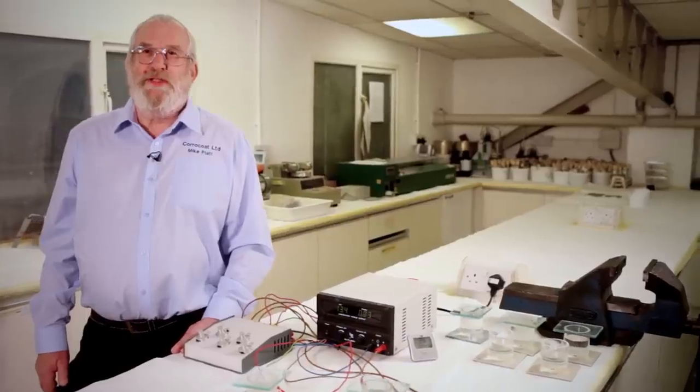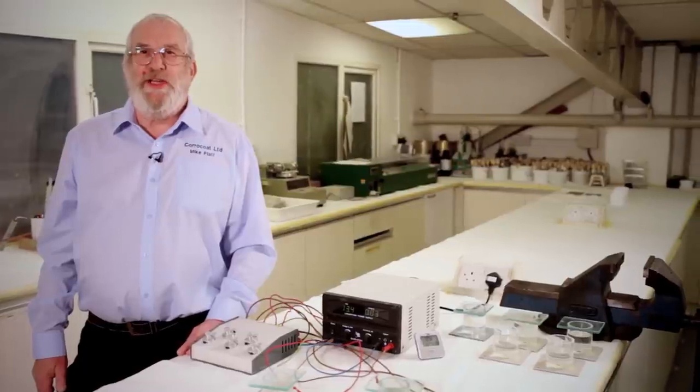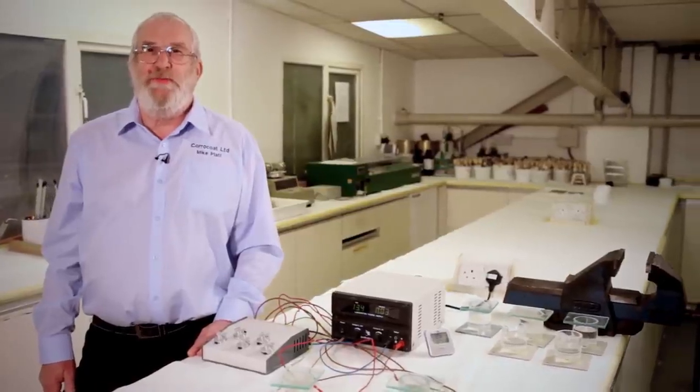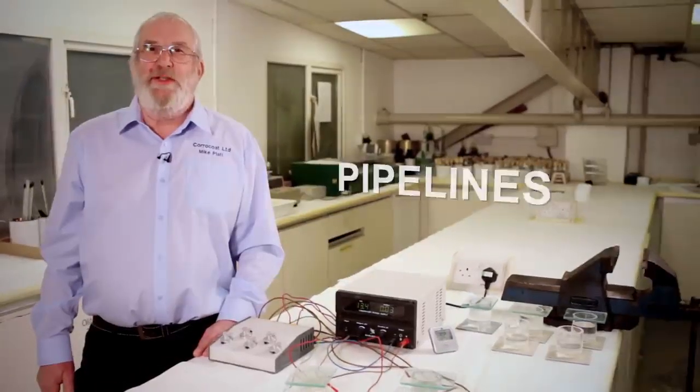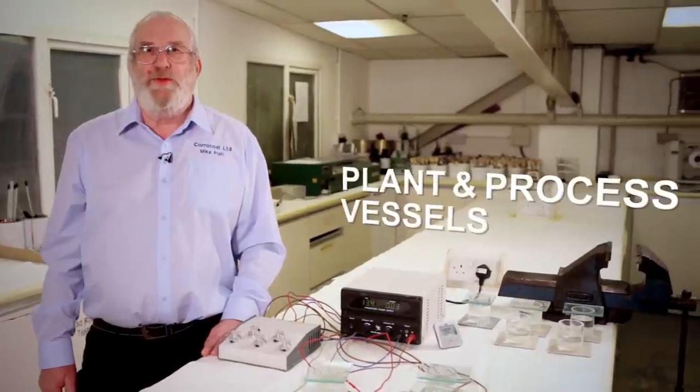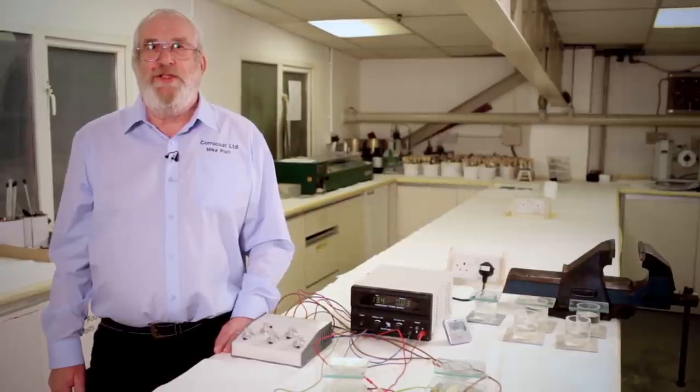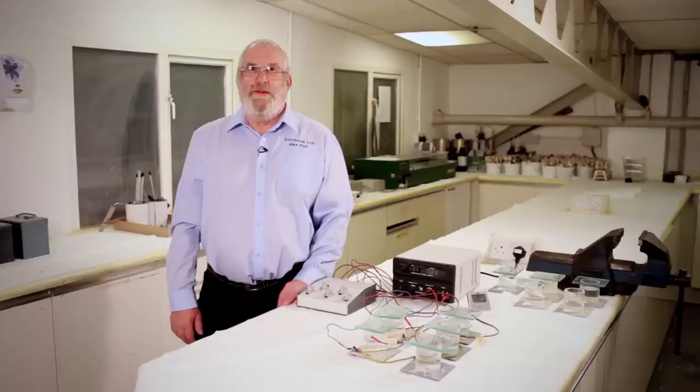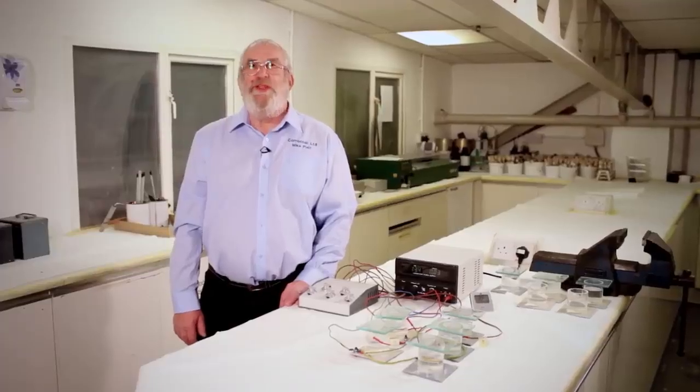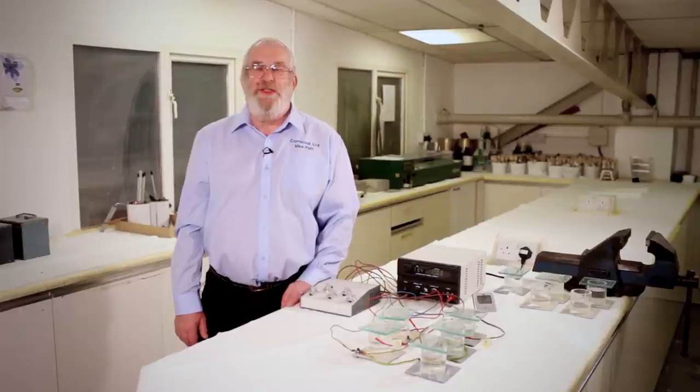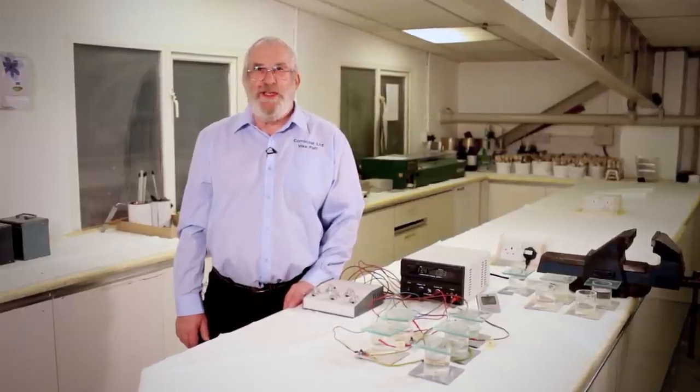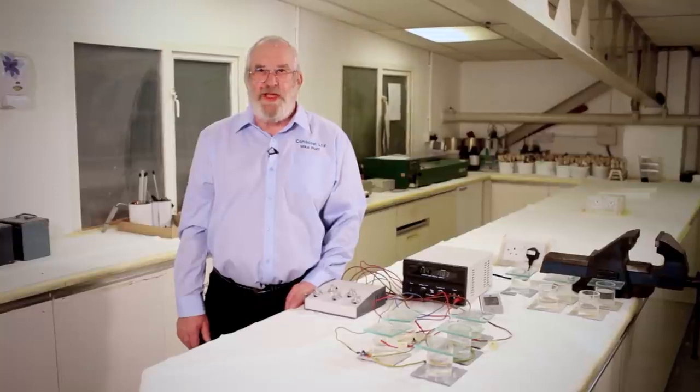Disbondment of coatings often occurs on items protected by impressed current systems such as pipelines, marine structures and ocean-going vessels, but can also occur on other plant and installations where cathodic reactions are taking place due to the corrosion process. It is therefore important to understand the coating's ability to resist cathodic disbondment in order to assess its performance for various applications.